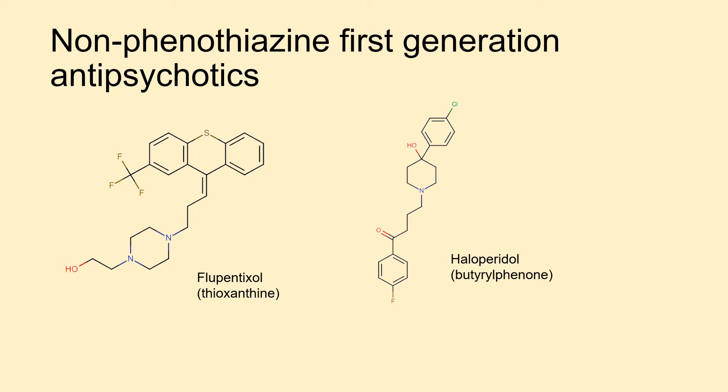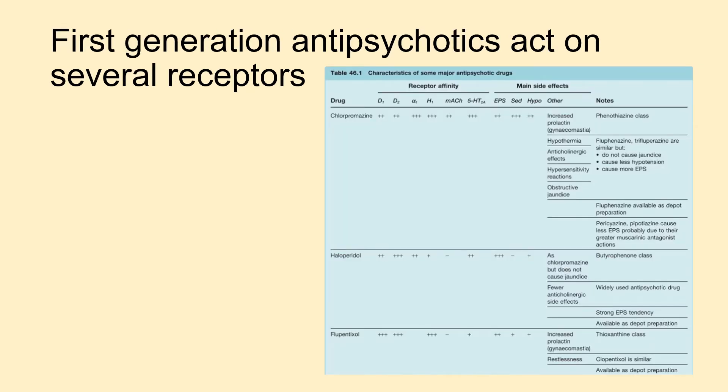Flupentixol looks like a phenothiazine but isn't — it lacks a nitrogen in the middle ring. The widely used antipsychotic haloperidol bears no resemblance to a phenothiazine at all. All first-generation antipsychotics are fairly promiscuous in their receptor actions, hitting alpha-1 adrenergic receptors, H1 histamine receptors, muscarinic acetylcholine receptors, and 5-HT receptors — which explains their varied side effects.